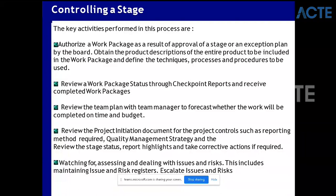Controlling a Stage starts after initiation and what you will do is create something called a work package - a work package is what has to be delivered in that particular stage. You will ask the team to pick up the work package and deliver it. You will have a team plan with the team manager, forecasting whether the work will be completed on time. Basically, before you start development you will do a control of a stage so that you know your products are getting delivered as required. It's more like governance on top of any delivery or development that happens.